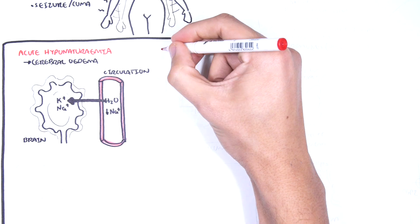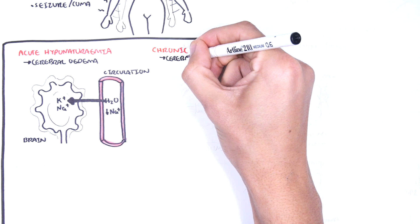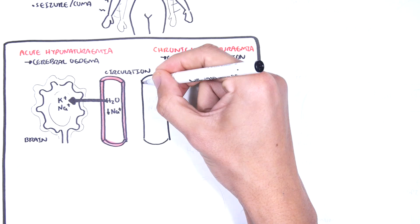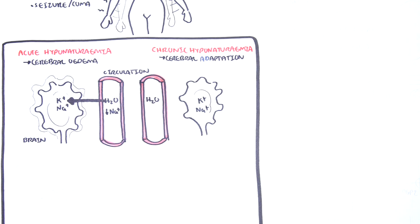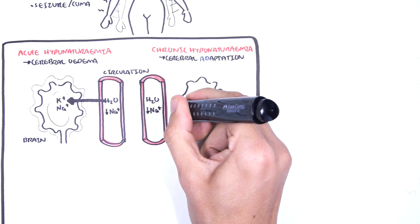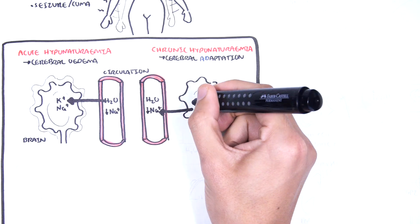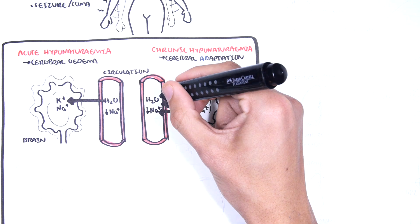In chronic hyponatremia, you don't get cerebral edema because of cerebral adaptation. This is where, because of time, electrolytes from the brain are able to distribute, equalizing the electrolytes in circulation and in the brain. And so sodium and potassium, for example, can move into circulation, and this allows water to equalize more safely.